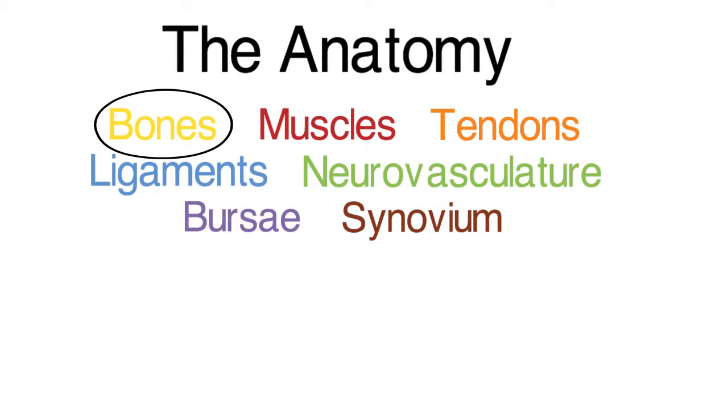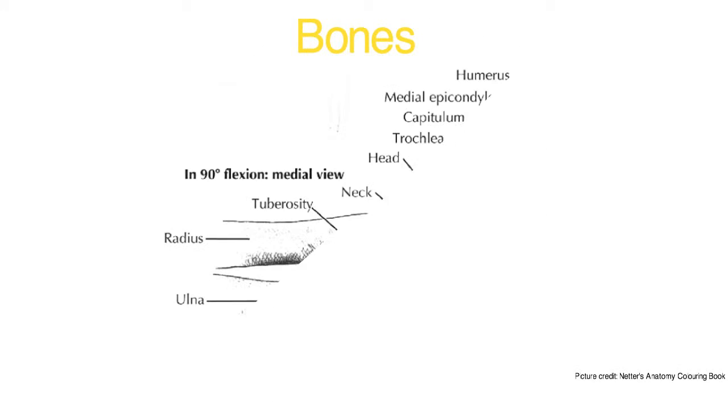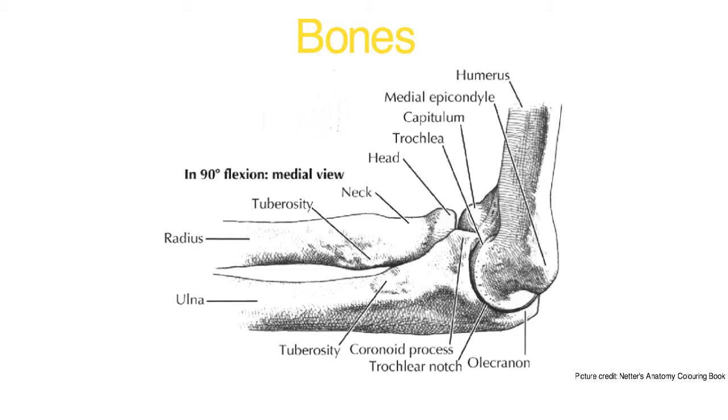First we will cover the bones. Important bones in the elbow are the radius and ulna as well as the humerus.